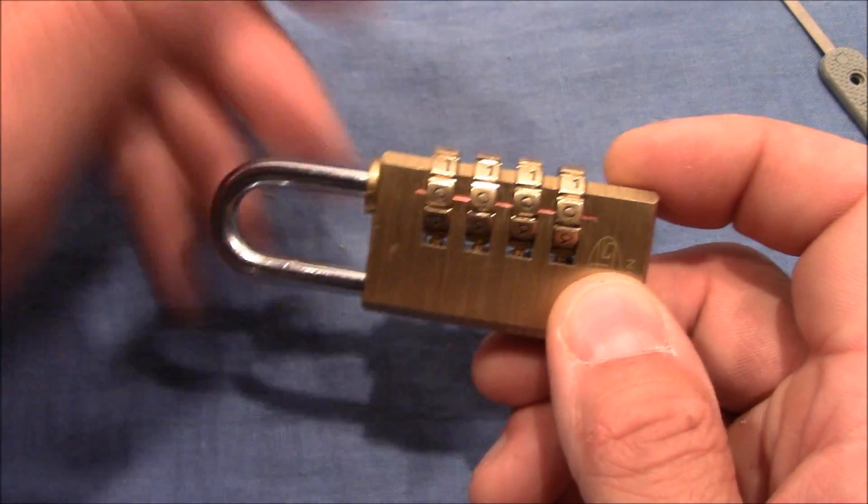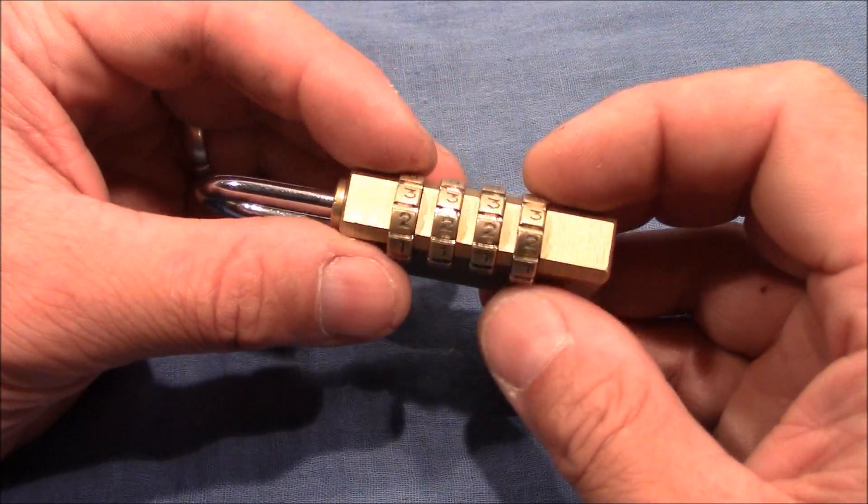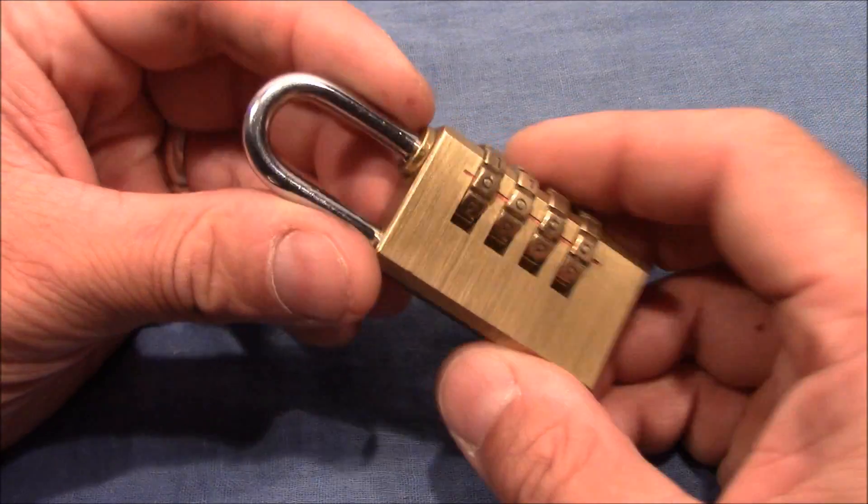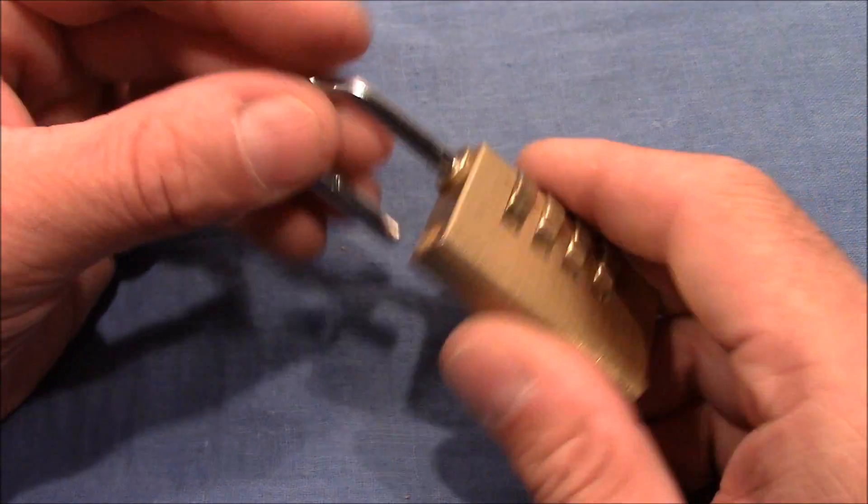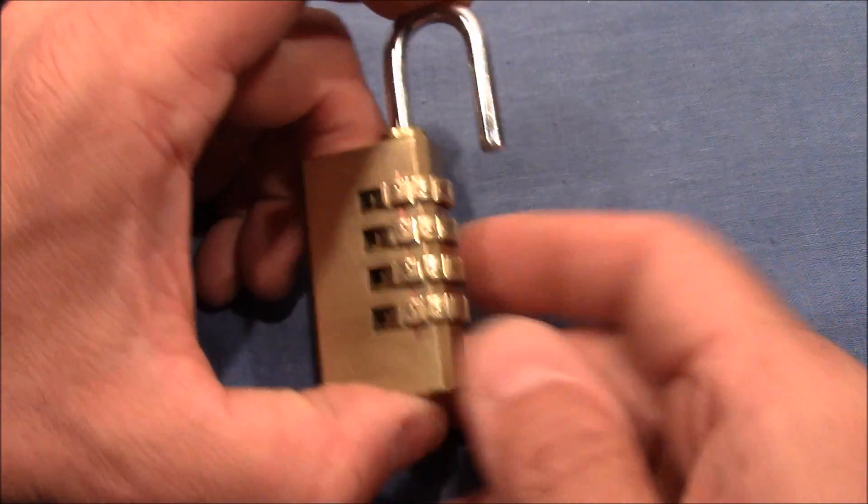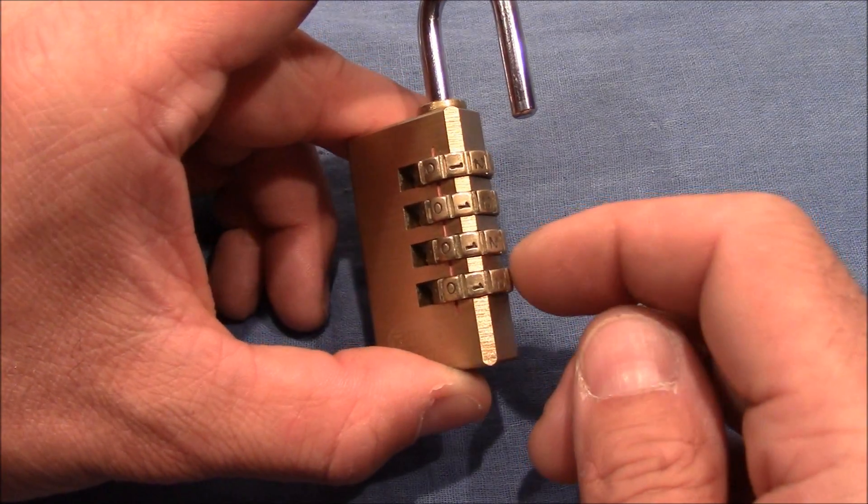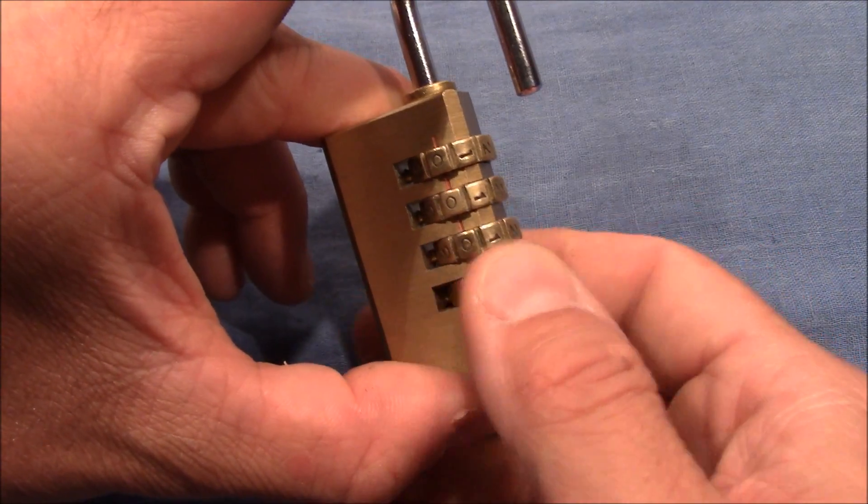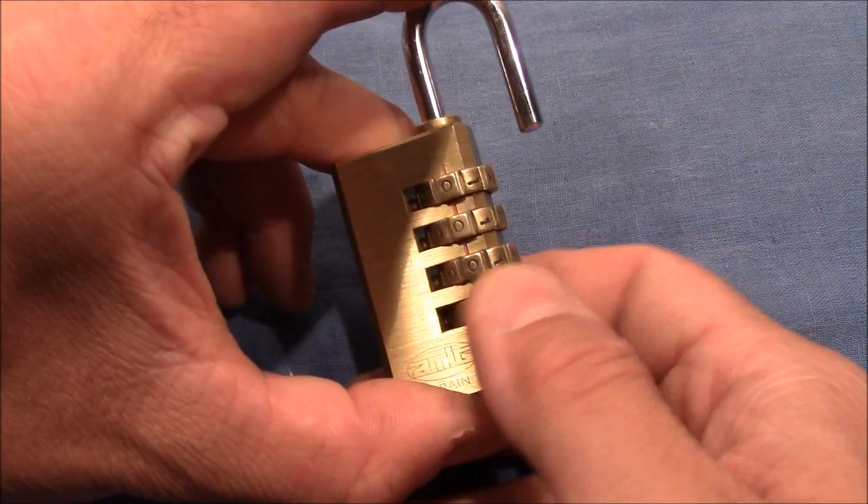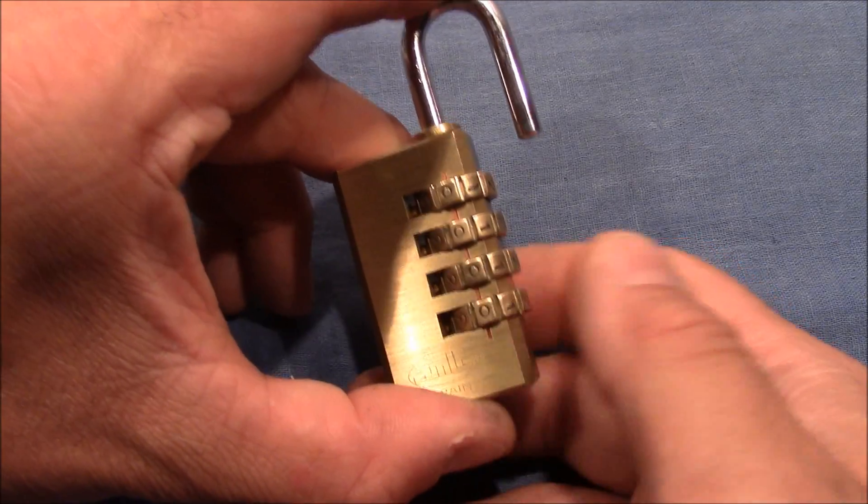So this lock has outer wheels and inner wheels and that's because you can change the combination on these locks. So when you turn the shackle at 180 degrees, push it inwards, you disengage the outer from the inner wheel so that turning the outer wheel doesn't move the inner wheel and you can change it to a new number.